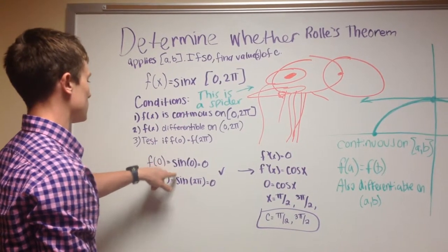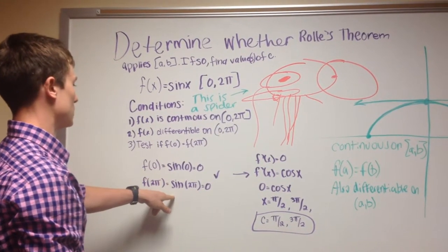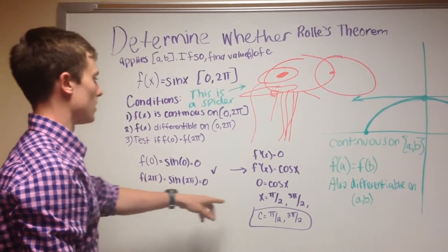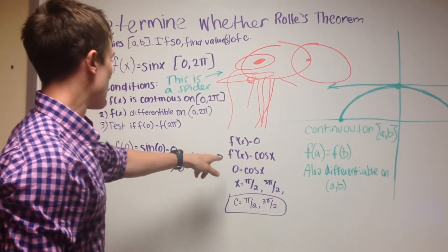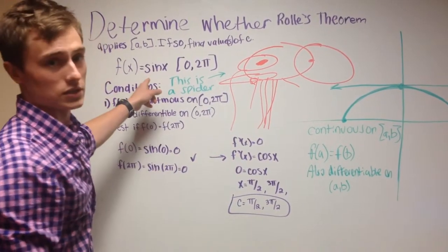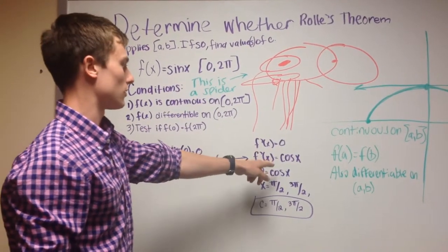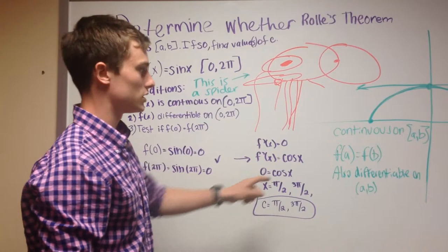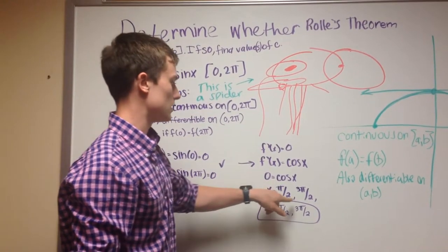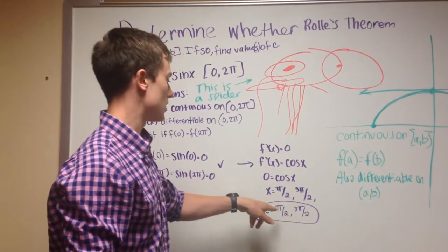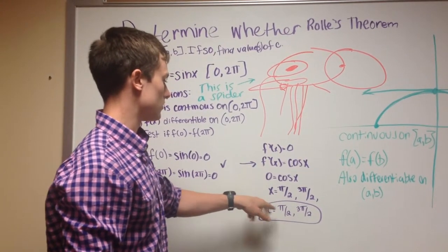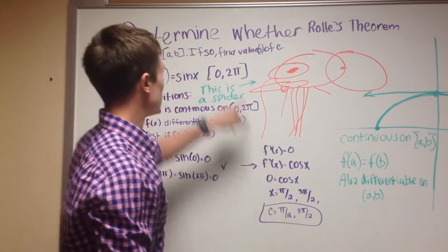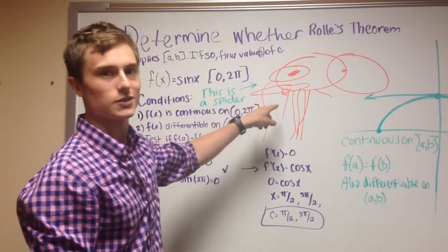We're going to test if f of zero equals f of two pi. If f of zero equals f of two pi, which it does, then we can take the derivative of the function. Remember the function is sin x, the derivative of that function is going to be cosine x. Then, we're going to set that cosine x equal to zero, and we're going to get these two values, pi over two and three pi over two. Those are the values of c that fulfill this.